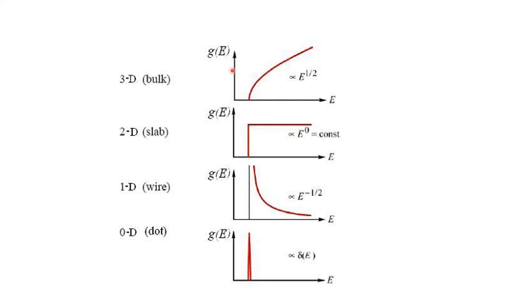To summarize: in 3D, the density of state is proportional to E^(1/2). In 2D (slab or thin film), it is constant. In 1D (wire), G(E) is proportional to E^(−1/2). In 0D (quantum dot or very small particle), it is a delta function δ(E) with a discrete value.